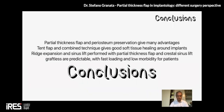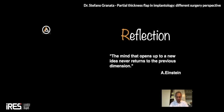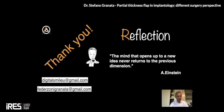In conclusion: partial thickness flap and periosteum preservation give many advantages. The tent flap and combined techniques give good soft tissue healing around implants. Ridge expansion and sinus lift performed with partial thickness flap and crestal sinus lift graftless are predictable with fast loading and low morbidity for patients. A reflection: 'The mind that opens up to a new idea never returns to its previous dimension' — Einstein. These are my contact details if you would like to ask me something, or please contact Iris for other information. Thank you very much.